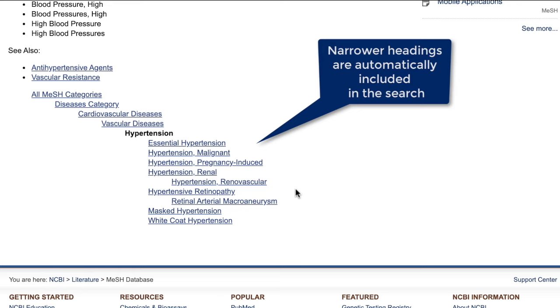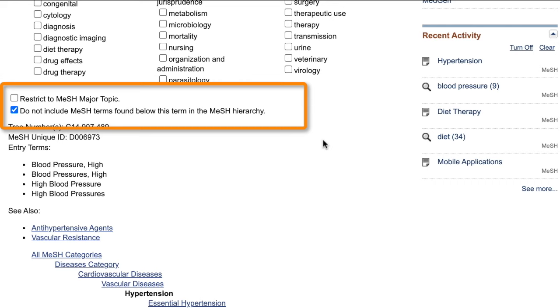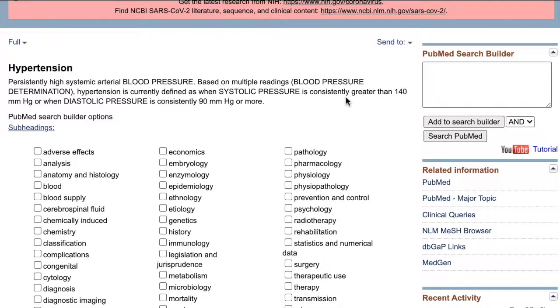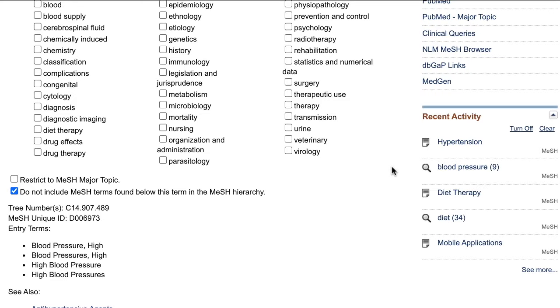The technical term for this is exploding. But if you want to exclude these narrower terms, you can click on the button next to 'do not include MeSH terms found below this term in the MeSH hierarchy.' Now, when I add the term to the search builder in brackets, you'll see MeSH colon no exp. Essentially, we're telling PubMed not to explode this heading. But in our case, I'm going to uncheck this box and just search with the MeSH hypertension. I'll copy and paste this into my Word document.